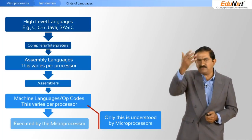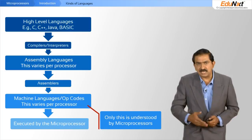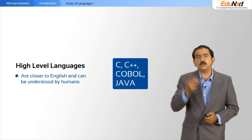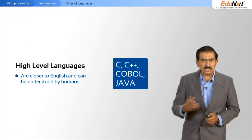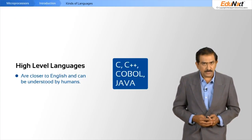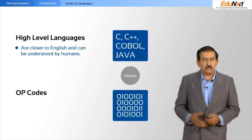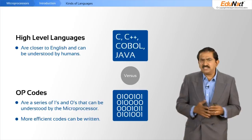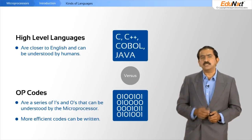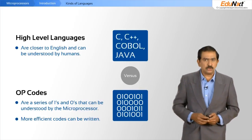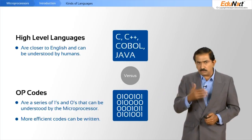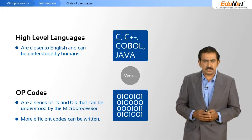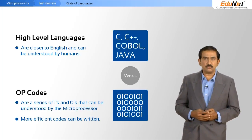So why do you have this hierarchy of languages? The reason is that high-level languages are closer to English and can be understood by human beings, whereas op codes are just a series of ones and zeros. A human being finds it extremely difficult to handle a string of ones and zeros, but for a microprocessor it is in its natural state — it loves ones and zeros. That is why you need this hierarchy of languages.